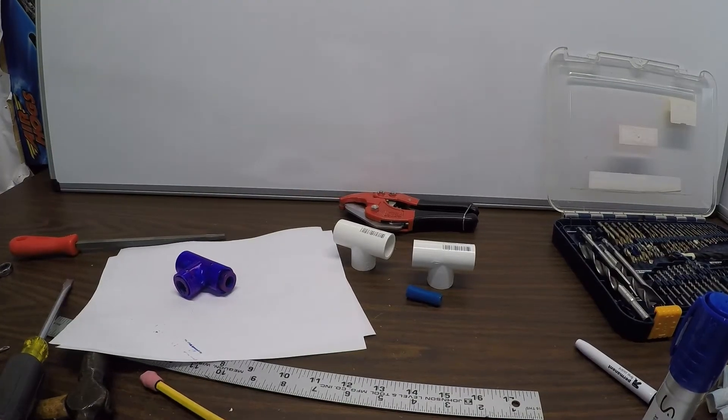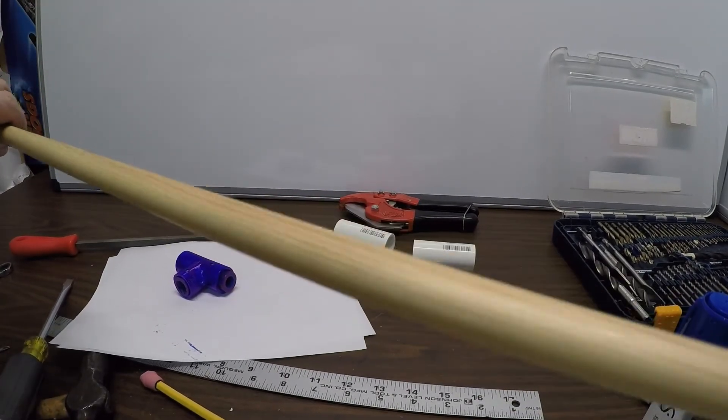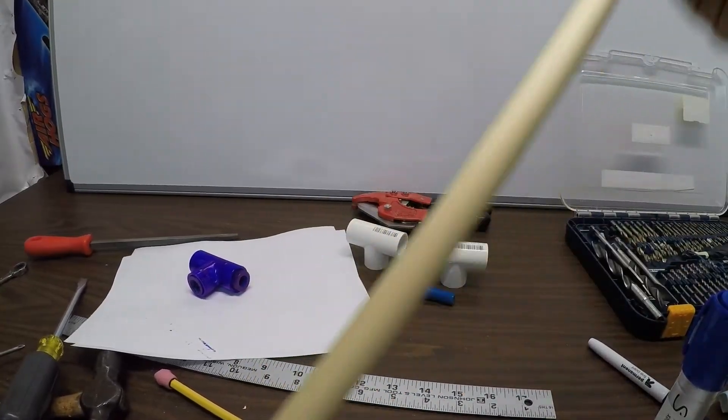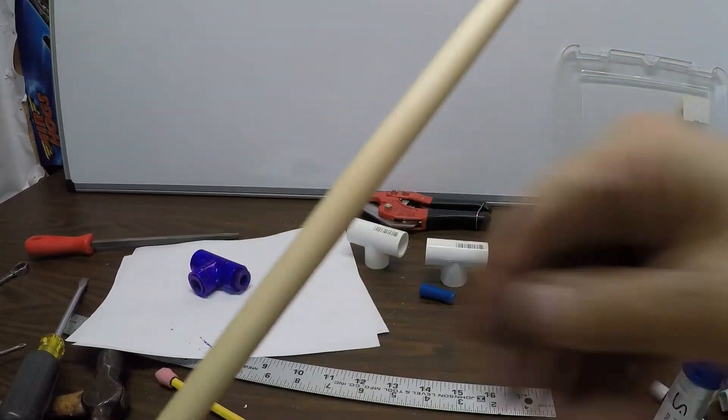I hit the dowel with some mineral oil just to protect it a little bit. Bring out the grain and maybe help it slide. The mineral oil also should help it keep it from warping. That's the protection I'm talking about.